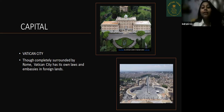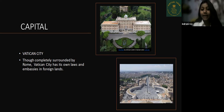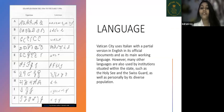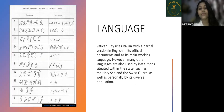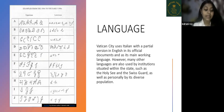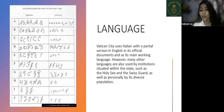The capital is Vatican City itself. Though completely surrounded by Rome, Vatican City has its own laws and regulations, as well as embassies in foreign lands. Vatican City uses Italian, with a partial version in English, in its official documents as its main working language. However, many other languages are used by institutions within the state, such as the Holy See — the central governing body of the Catholic Church — and the Swiss Guards, who are the armed force there.